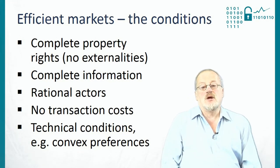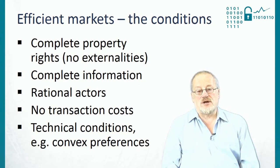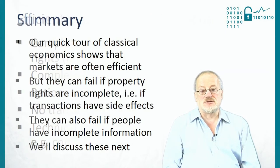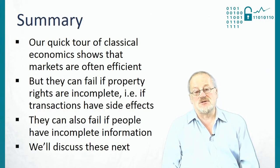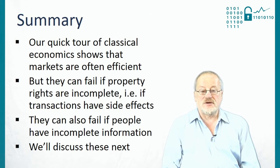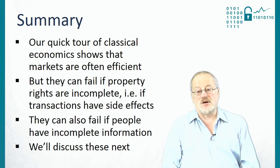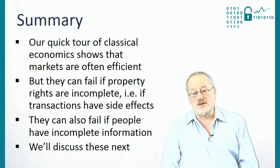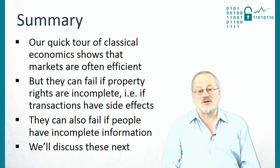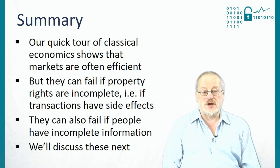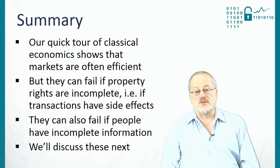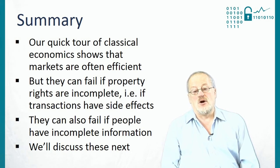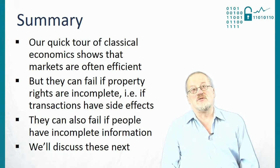In summary, our quick tour of classical economics shows that markets are often efficient, but they can fail if property rights are incomplete — that is, if transactions have side effects — or if people have incomplete information, or if people are irrational. We're going to discuss these failure modes next.